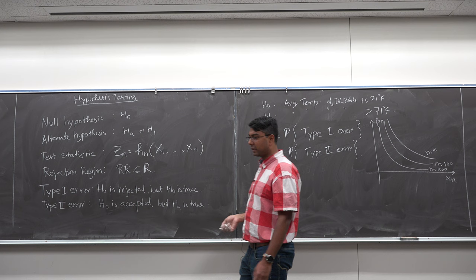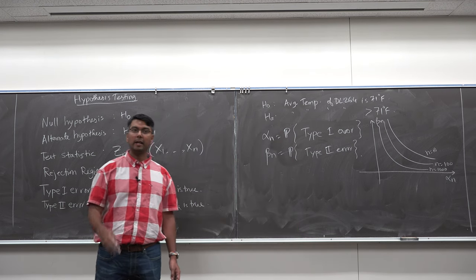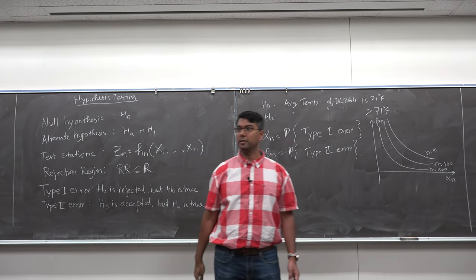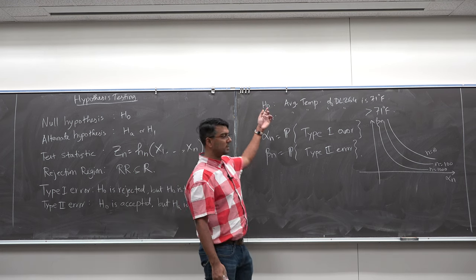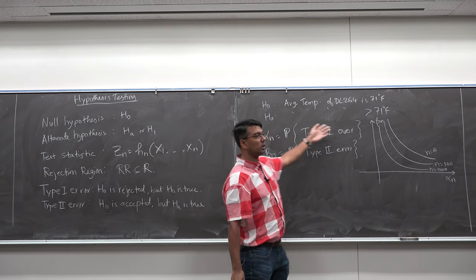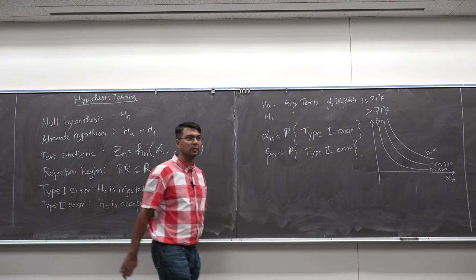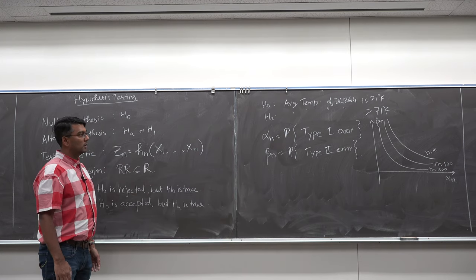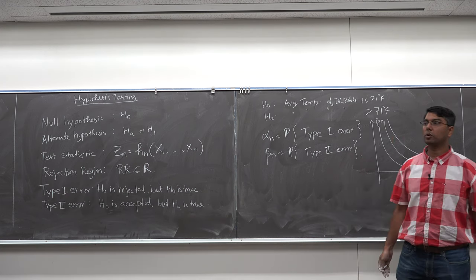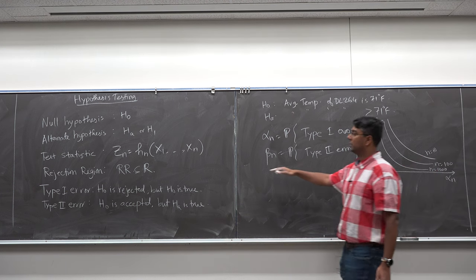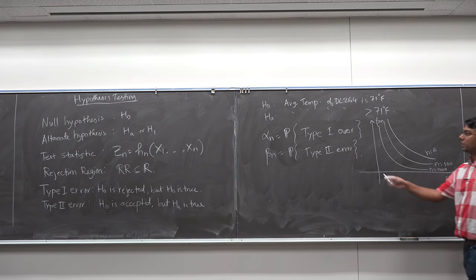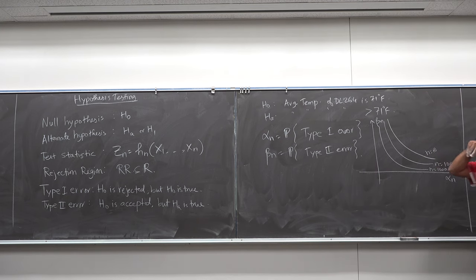Consider a drug context. H0: the drug cures your headache. HA: it does not. I give the drug to 10 patients, observe whether headaches are cured, compute a test statistic, define a rejection region, and pick H0 or HA — incurring some probability of type 1 error and type 2 error.